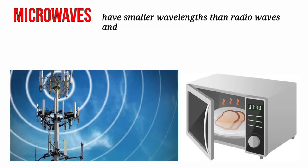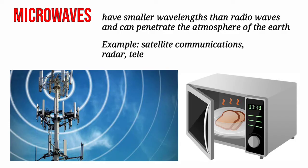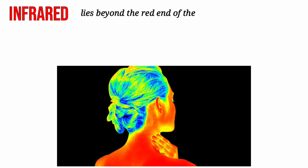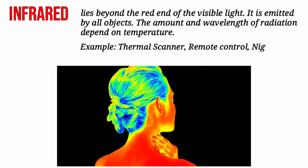Microwaves have smaller wavelengths than radio waves and can penetrate the atmosphere of the Earth. Infrared lies beyond the red end of the visible light. It is emitted by all objects. The amount and wavelength of radiation depend on temperature.